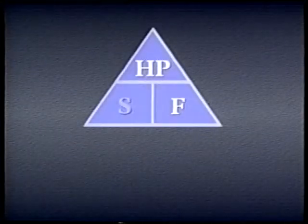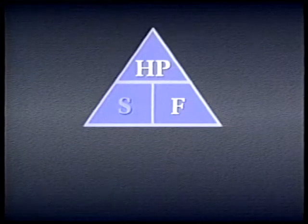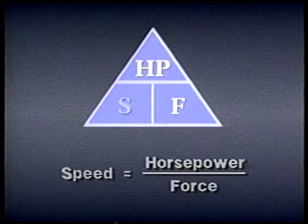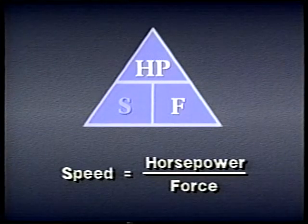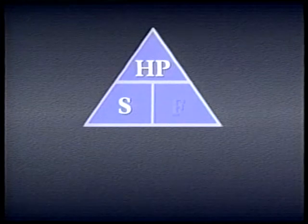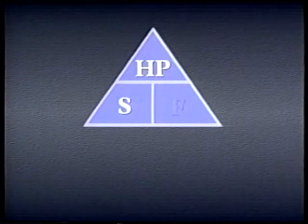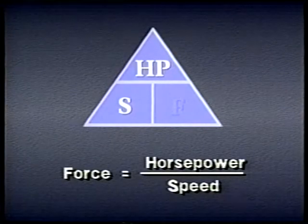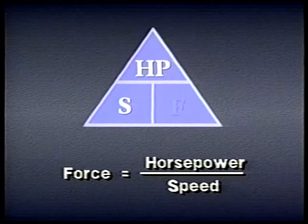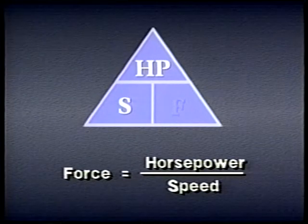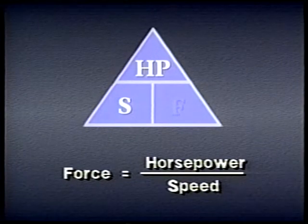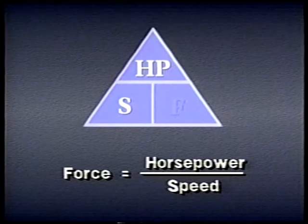If we want to know the speed at which an actuator will work, we divide horsepower by force. If we want to know the force needed to achieve a certain speed, we divide horsepower by speed. When making your calculations, be sure you use the correct units — otherwise, your answer will be incorrect.